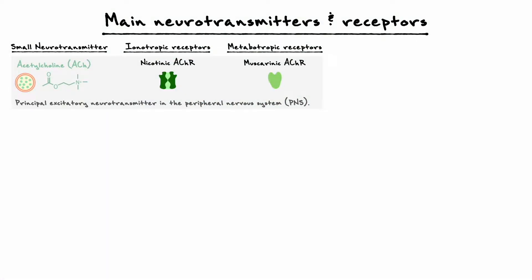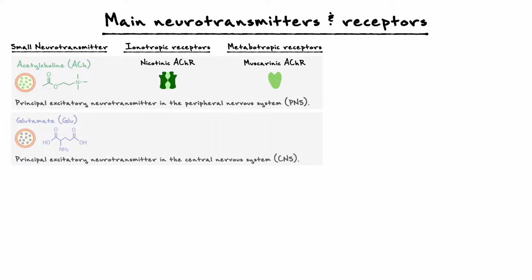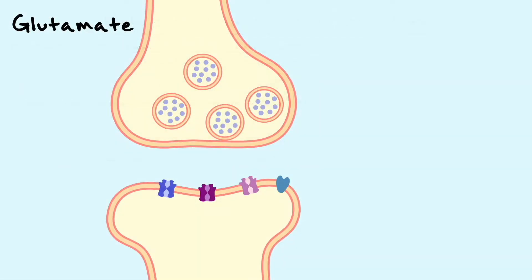We now have a good idea behind what's going on with acetylcholine across the body. The next neurotransmitter I want to cover is glutamate, which is the major excitatory neurotransmitter in the brain and the spinal cord. To understand its function, let's consider a synapse with presynaptic glutamate and the respective postsynaptic receptors, and discuss the life cycle of glutamate from synthesis to recycling.